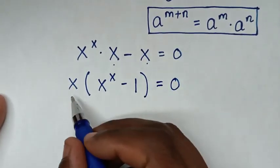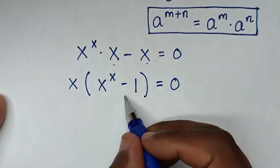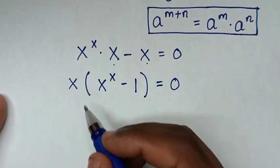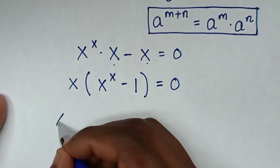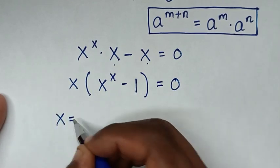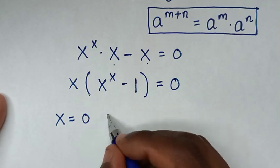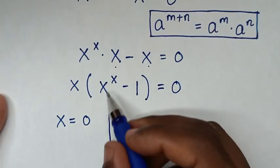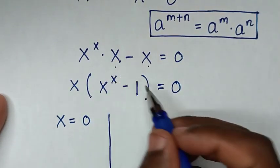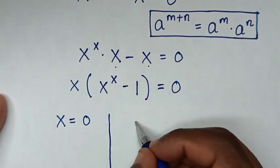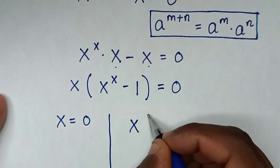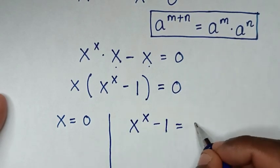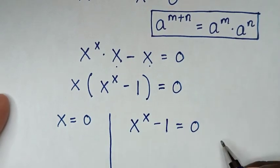From here we have two solutions. The first solution is x is equal to 0, and the second solution is x^x minus 1 is equal to 0.